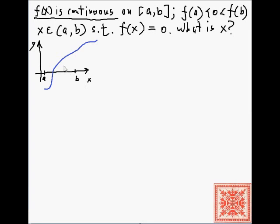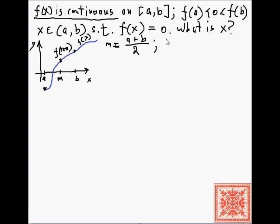We're interested in finding and approximating roots of f. We have this continuous function f on [a, b]. We are going to take the midpoint to be the average of a and b, so it's going to be (a + b) / 2. We look at the value f(m). There are three cases: f(m) can be 0, and if that is the case, we are really lucky and we've found the root — we just return m, the midpoint.